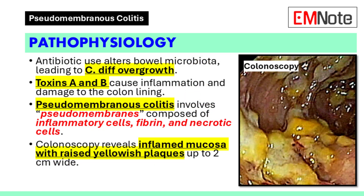Pathophysiology and pseudomembranes: Antibiotic use alters the normal bowel microbiota, permitting Clostridium difficile overgrowth. Clostridium difficile produces toxins A and B, which cause inflammation and damage to the colon lining. Pseudomembranous colitis is characterized by the formation of pseudomembranes on the colonic mucosa.